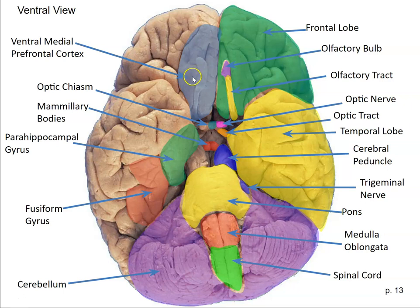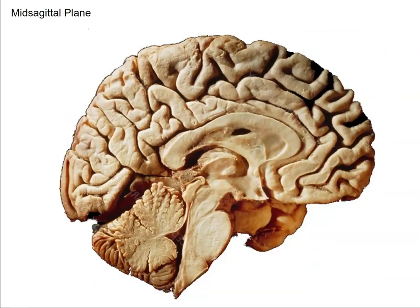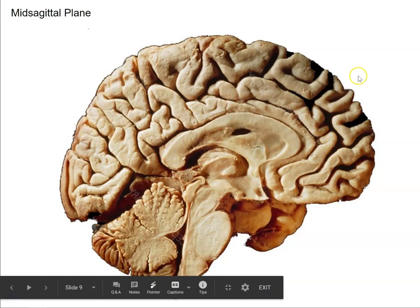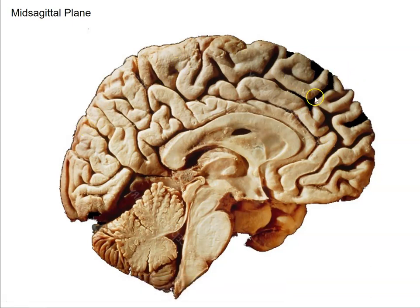That's it for the ventral view. Moving on to the mid-sagittal view: here we've cut down the mid-sagittal plane, creating a mid-sagittal section. We started slicing down through the longitudinal fissure — in fact, we didn't really cut any brain until we got to this structure, because what you're looking at is just the medial wall of the left cerebral hemisphere. You'd have something close to a mirror image on the right hemisphere, butted up against it but not really touching.